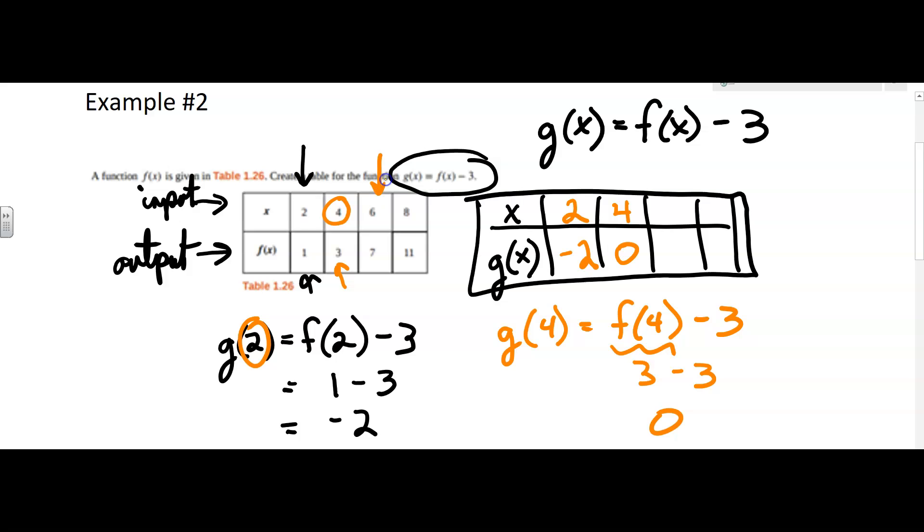So our next input is going to be 6. Then we're going to take the f of 6, which is 7, and subtract 3.